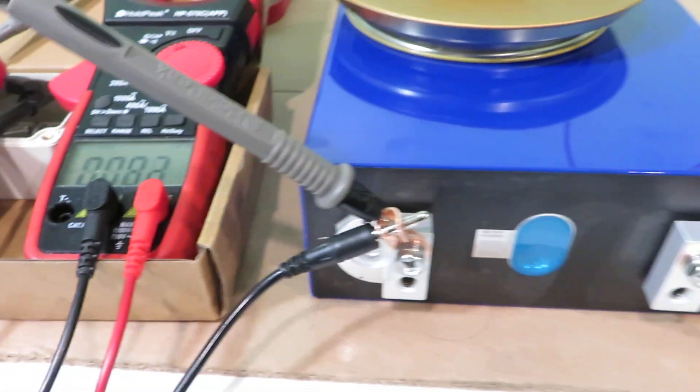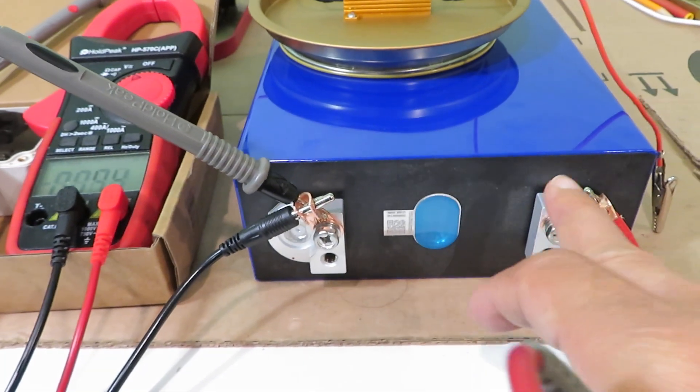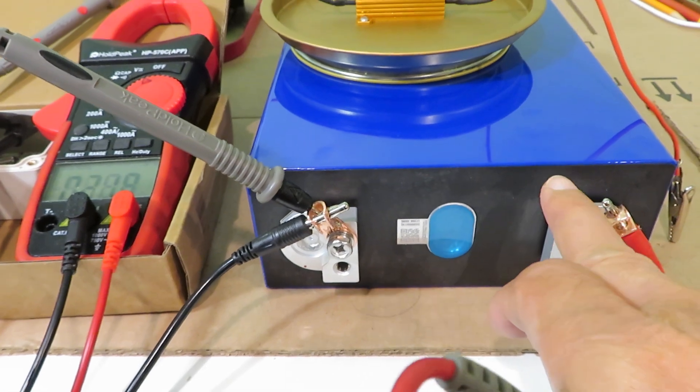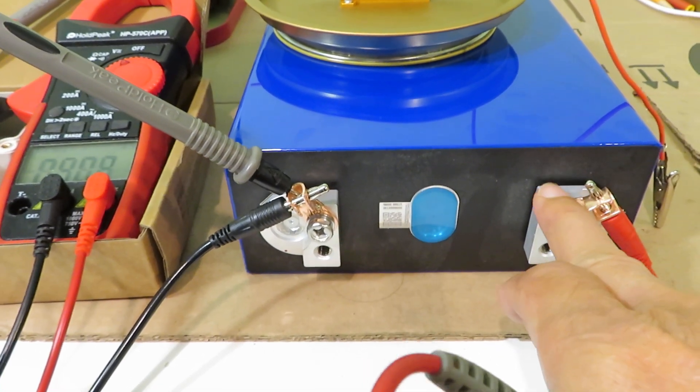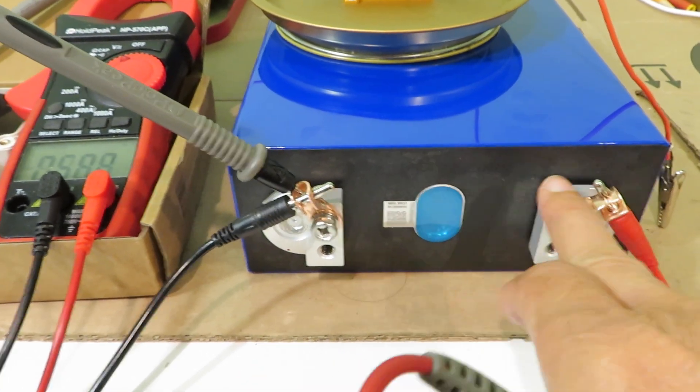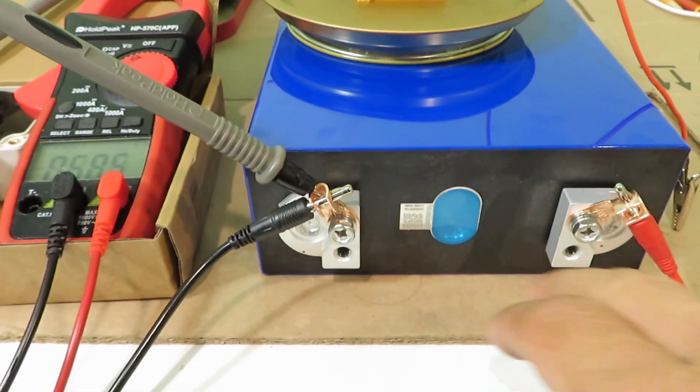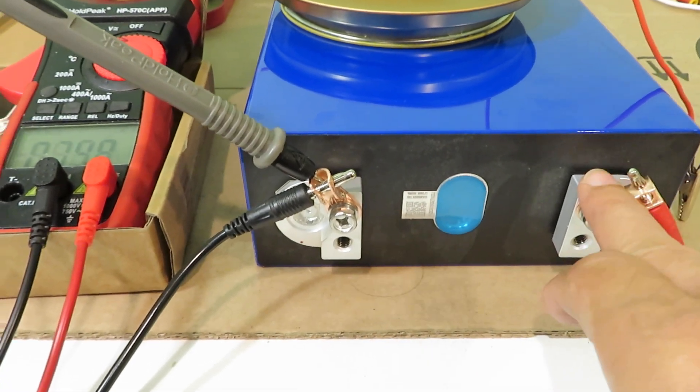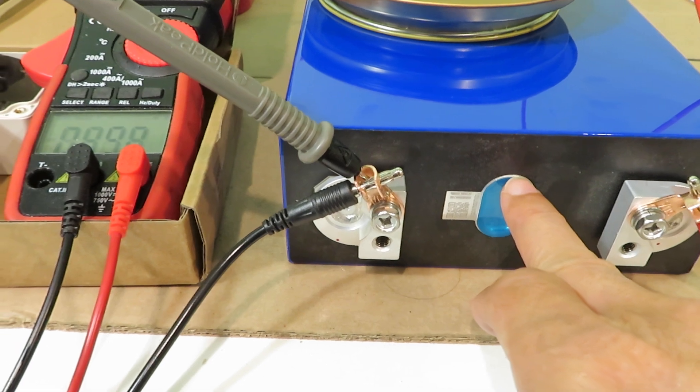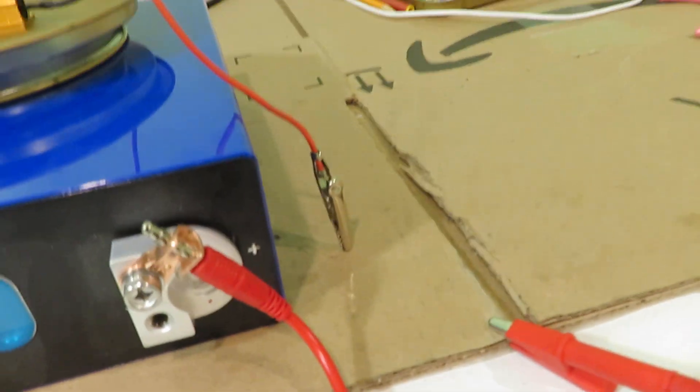So it appears that the aluminum casing is in the same voltage level as the positive terminal. So let's measure the positive against the aluminum casing.